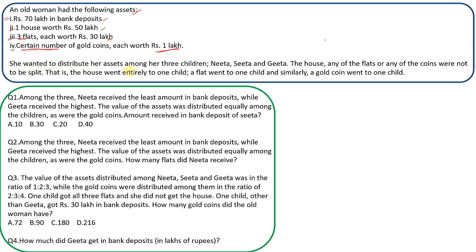She wanted to distribute her assets among three children: Nita, Sita, and Gita. The house, any of the flats, or any of the coins were not to be split. So we cannot divide a house, flat, or coin — each goes entirely to one child. A house went to exactly one child, a flat went to exactly one child, and similarly a gold coin went to one child.